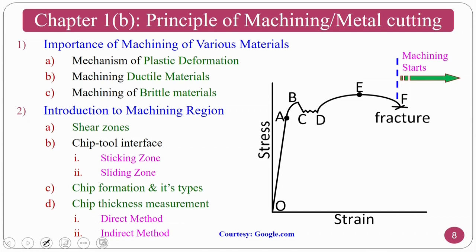In Chapter 1B, Principles of Metal Cutting, we deal with the mechanism of plastic deformation. Normally the machining process is considered a severe plastic deformation process. If you see the stress-strain diagram, machining starts from the position after severe plastic deformation where fracture begins. We also deal with the mechanics of machining of ductile materials, as shown in the stress-strain diagram, and machining of brittle materials, where the stress-strain graph will be slightly different.